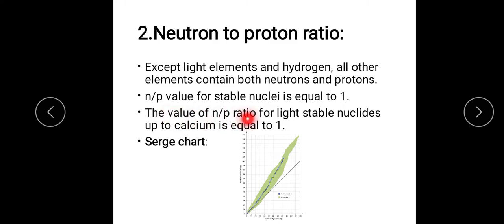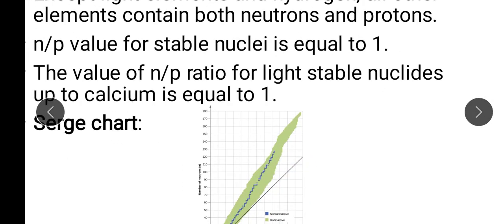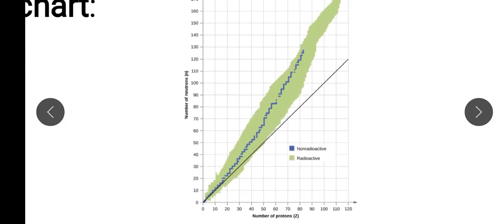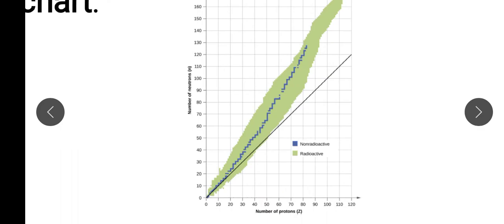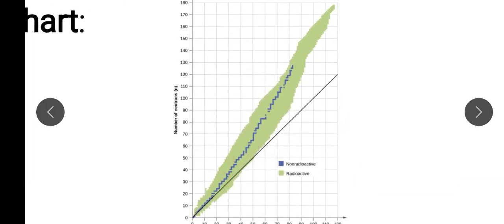The value of N/P ratio for light stable nuclides — up to calcium (atomic number 20) — is equal to 1. We have a chart called the Segre chart. On the Y-axis is the number of neutrons and the X-axis the number of protons. The blue area is the zone of non-radioactive stability. The straight imaginary line represents where the neutron to proton ratio equals 1.